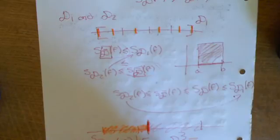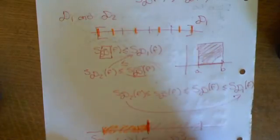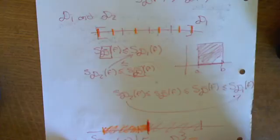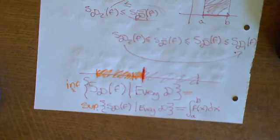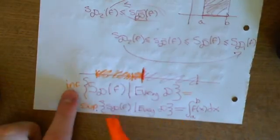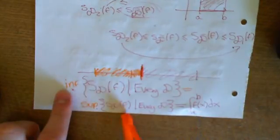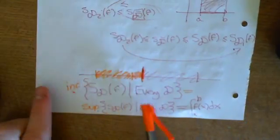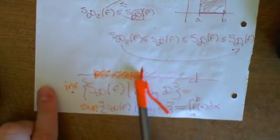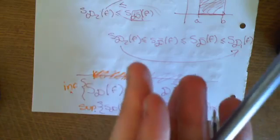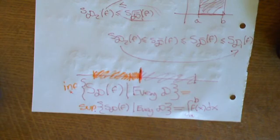If the infimum of the set of all upper Riemann sums is equal to the supremum over every single dissection of the lower Riemann sums, then the function is said to be Riemann integrable, and that value sandwiched in between these two sets is defined to be the integral from a to b of f(x) dx. So that's the definition of the Riemann integral.